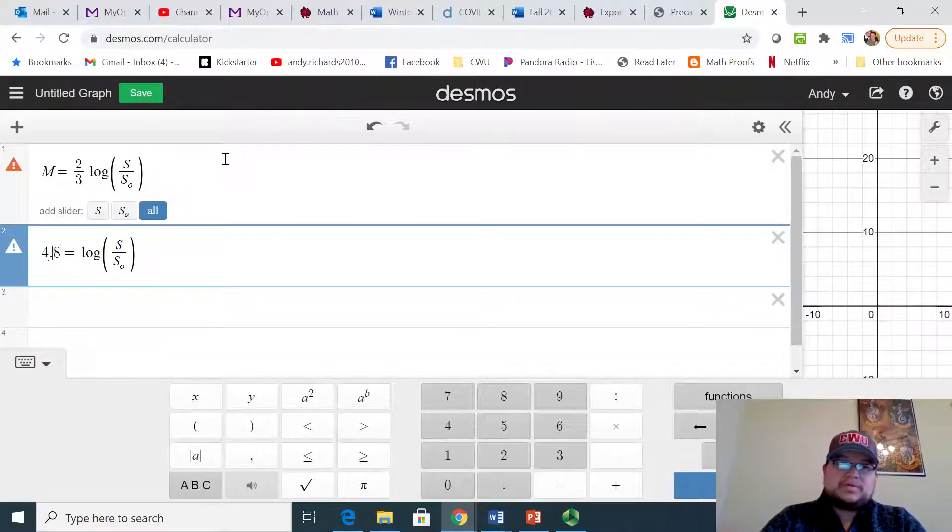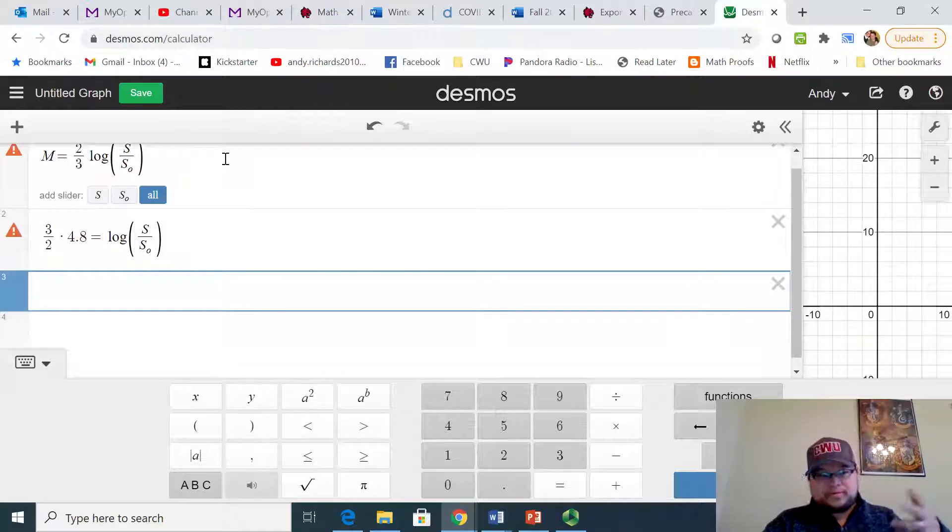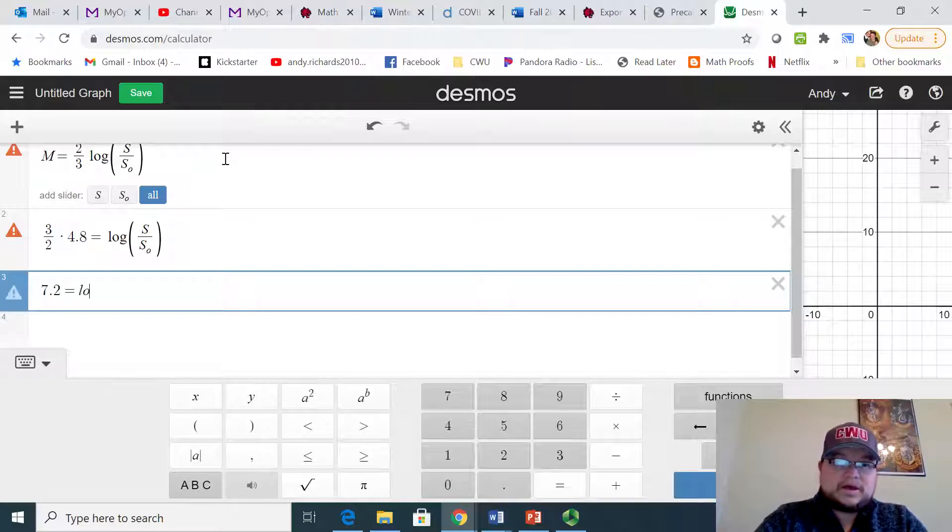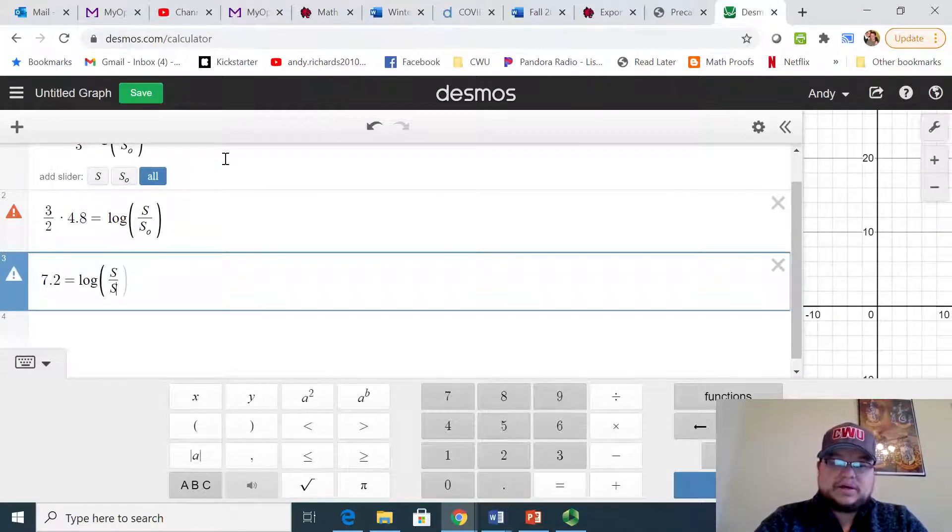So we would multiply both sides by 3 over 2 here, and that's 3 over 2 times 4.8, would be the same as 4.8 plus 2.4. That's going to give us 7.2, and then we have the logarithm of this S over S sub zero.